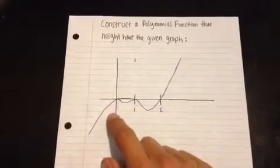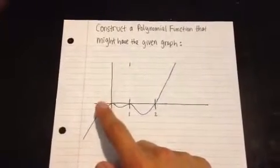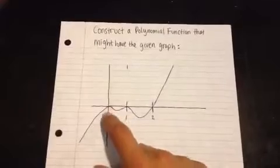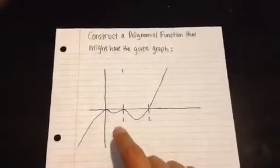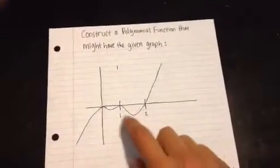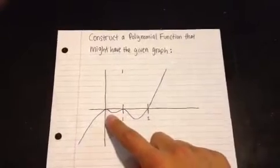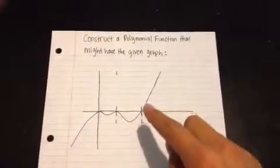Although it's not written down here, know that this is the origin and that is zero and zero right there. So zero, positive one, and two are points at which the x-axis is touched or passed through.